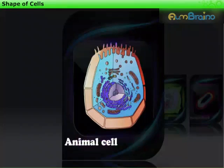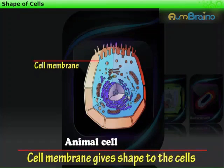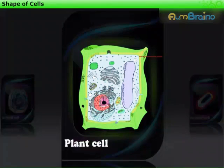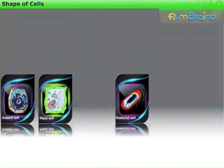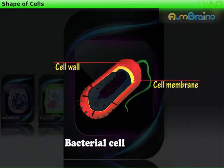Components of the cell are enclosed in a membrane. This cell membrane gives shape to the cells. In plant cells, apart from the cell membrane, an additional covering known as cell wall gives shape and rigidity to the cells. Note that a bacterial cell also has a cell membrane as well as a cell wall.